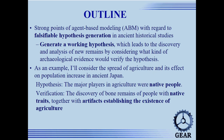This is an outline of today's presentation. I will discuss the strong points of agent-based modeling with regard to falsifiable hypothesis generation in ancient historical studies. In particular, I will consider a method for generating working hypotheses that lead to the discovery and analysis of new remains by considering what kind of archaeological evidence would verify the hypothesis. As an example, I will consider the spread of agriculture and its effect on population increase in ancient Japan. The hypothesis is that the major player in agriculture were native people.